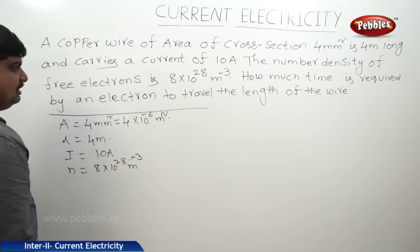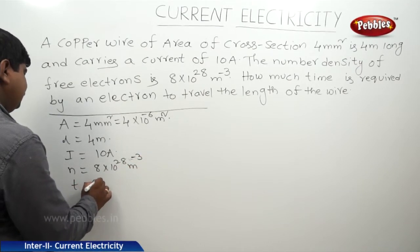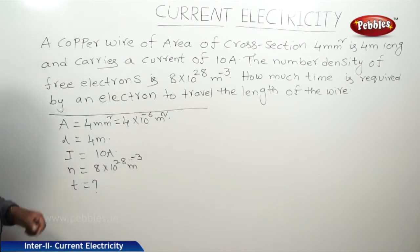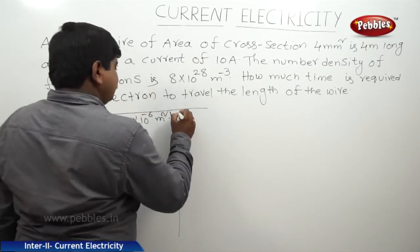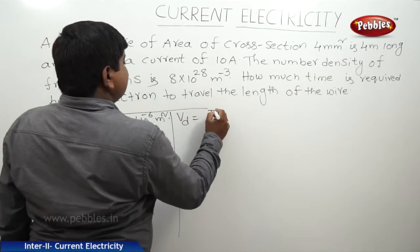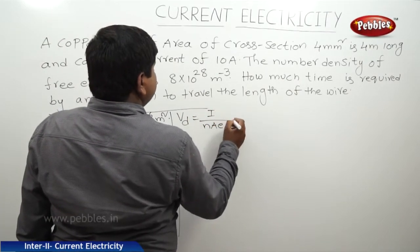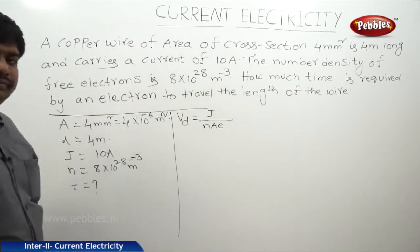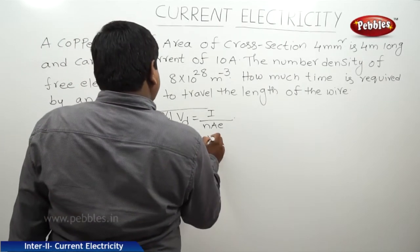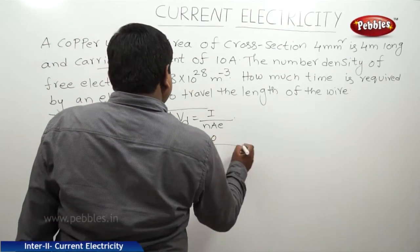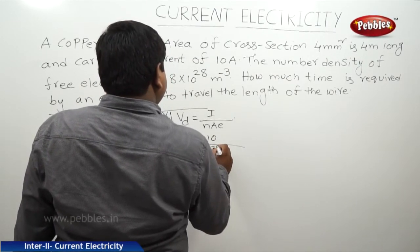To find the time required for an electron to travel the length, we first find the drift velocity Vd, which equals I divided by n·A·e. Substituting: Vd equals I of 10 amperes divided by n of 8 into 10 to the power of 28.